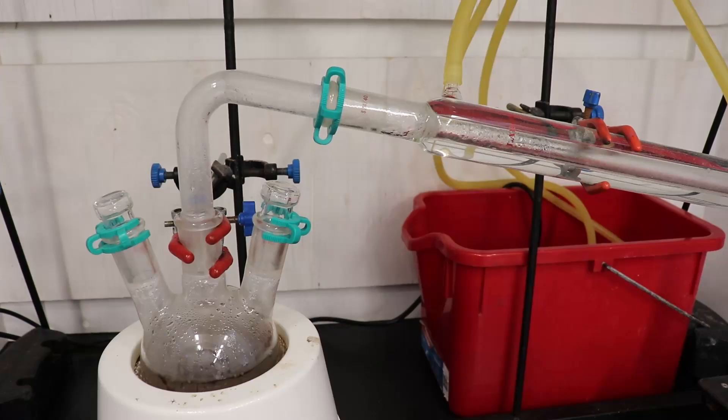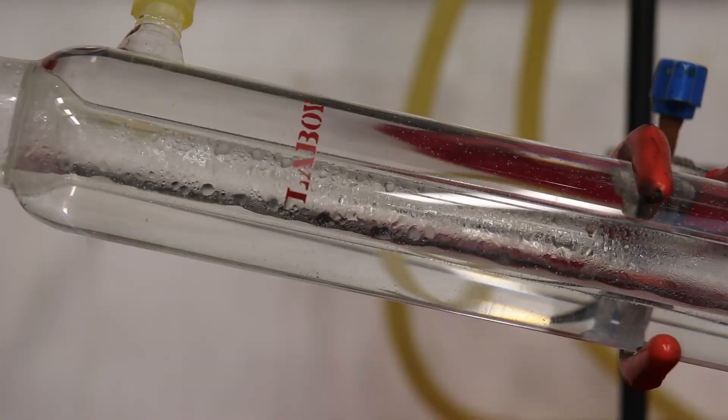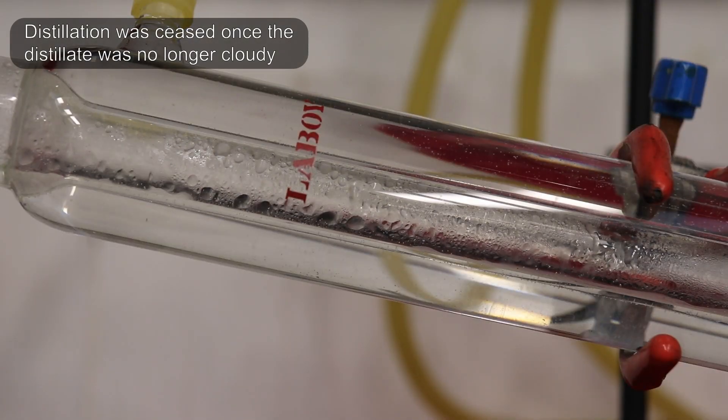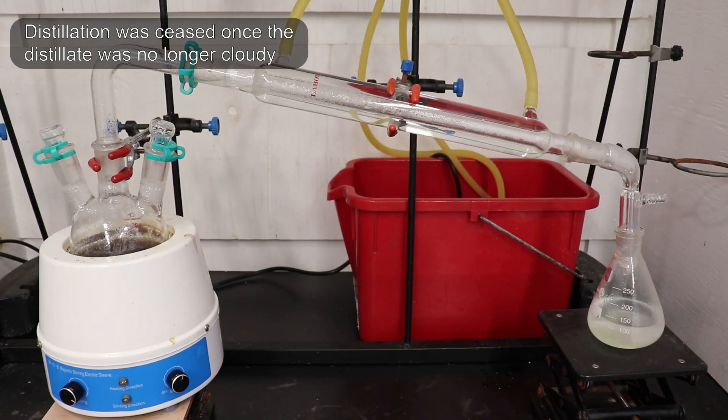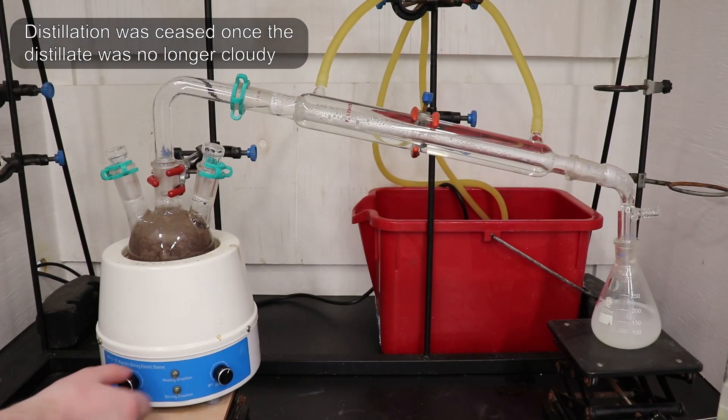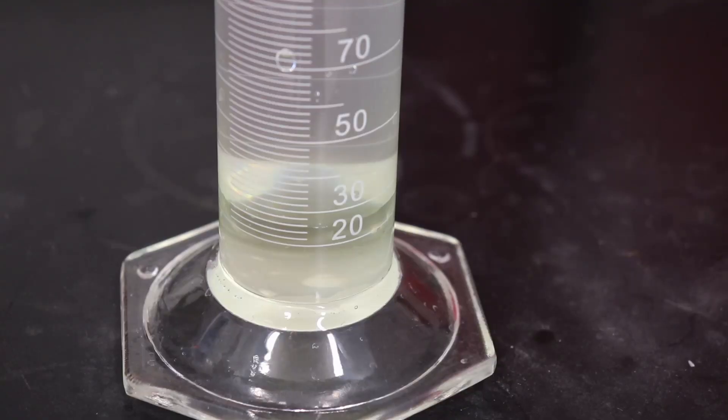I then set up for simple distillation and steam distilled the mixture. I ended up collecting 250 ml of distillate in total, with about 25 ml of a lower organic layer consisting of the recovered nitrobenzene and 225 ml of water.